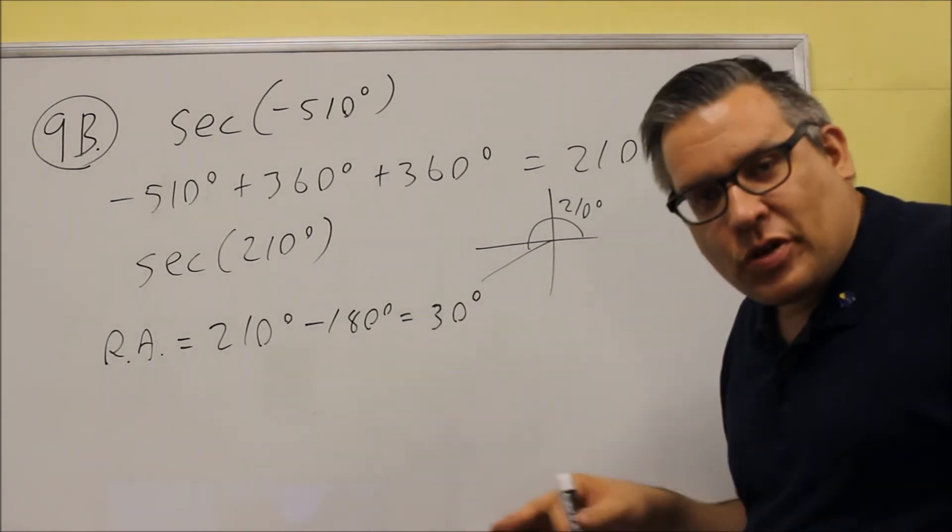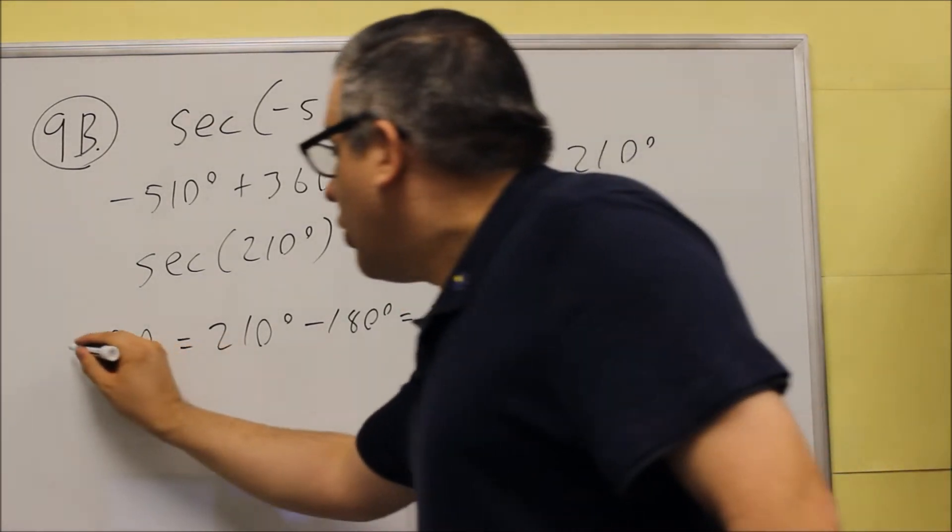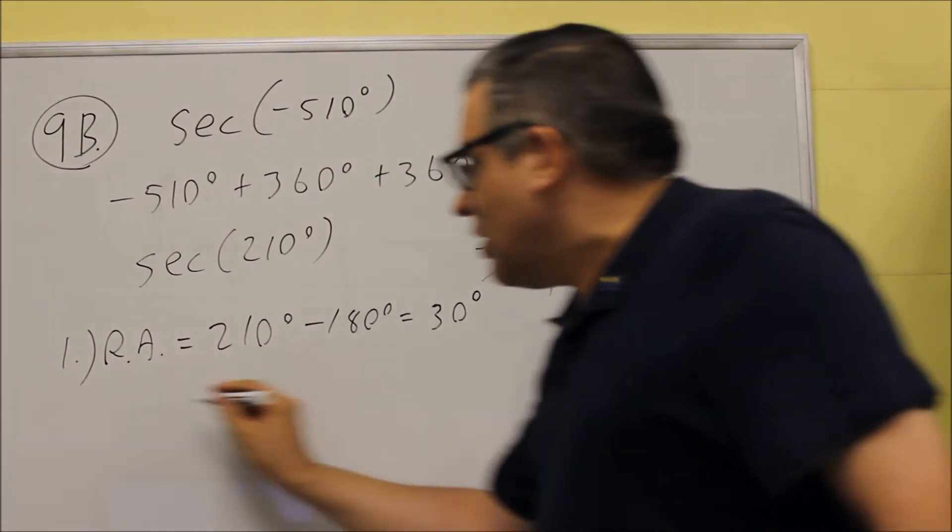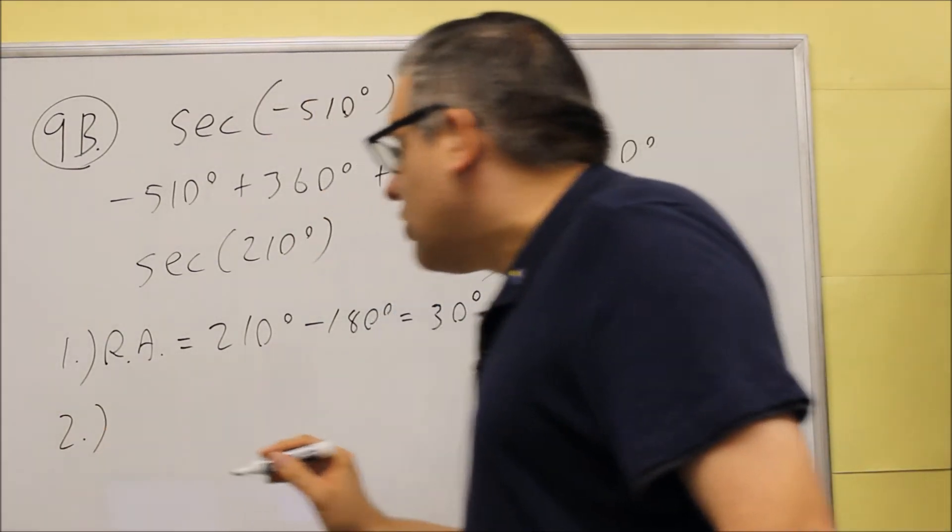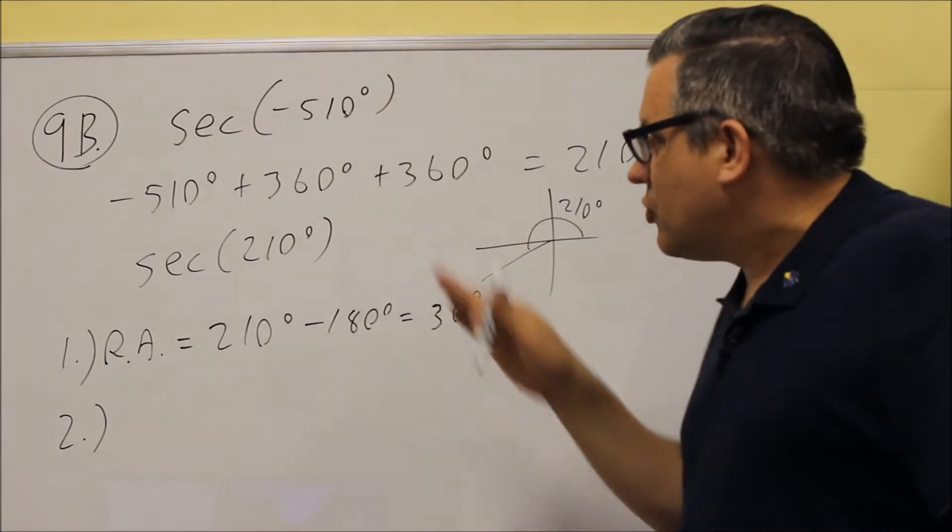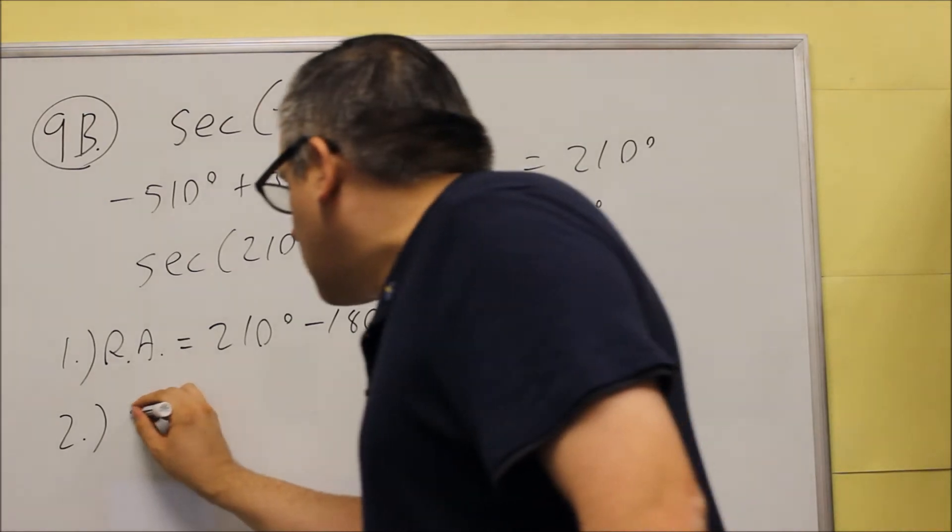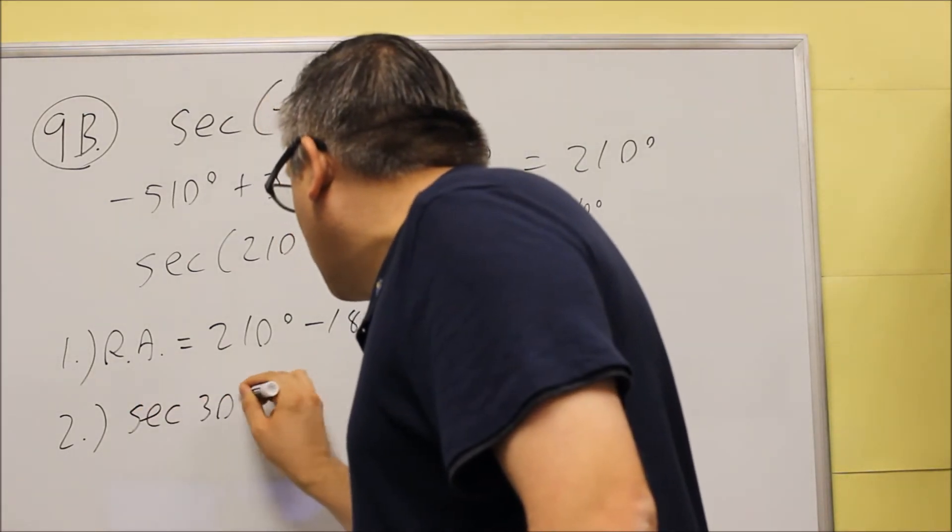Now, if I want to find the value, I have a three-step process I have to do in order to get to that. The first step would be to find the reference angle. The second step would be to apply the trig function to the reference angle. The trig function here is secant. So I want to do secant 30 degrees.